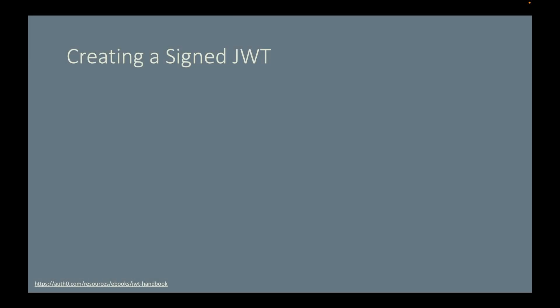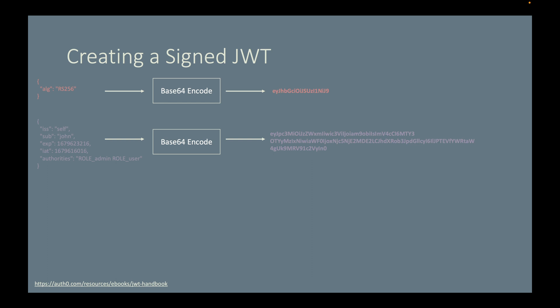To create a signed JWT, first we need to get our claims. This claim is about the signing algorithm — we're using RS256. This is the payload, and as you can see there are five claims. These two JSON objects are then base64 URL encoded, and then we join these two encoded strings with a dot.